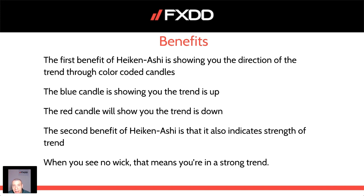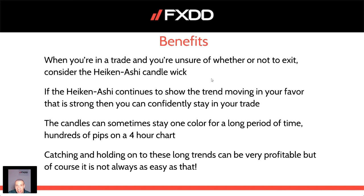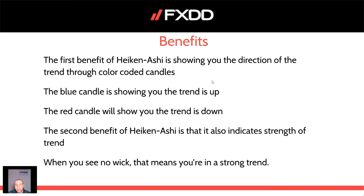By default on MT4 the candles are white and red, but you can change the colors. This is how I use it: the blue candle shows when the trend is up, and the red candle shows when the trend is down. The second benefit of Heiken Ashi is that it also indicates the strength of a trend. In standard Japanese charting, a big wick to the upside or downside means buyers or sellers are taking control. But in standard Heiken Ashi, when you see no wick, that means you're in a strong trend.